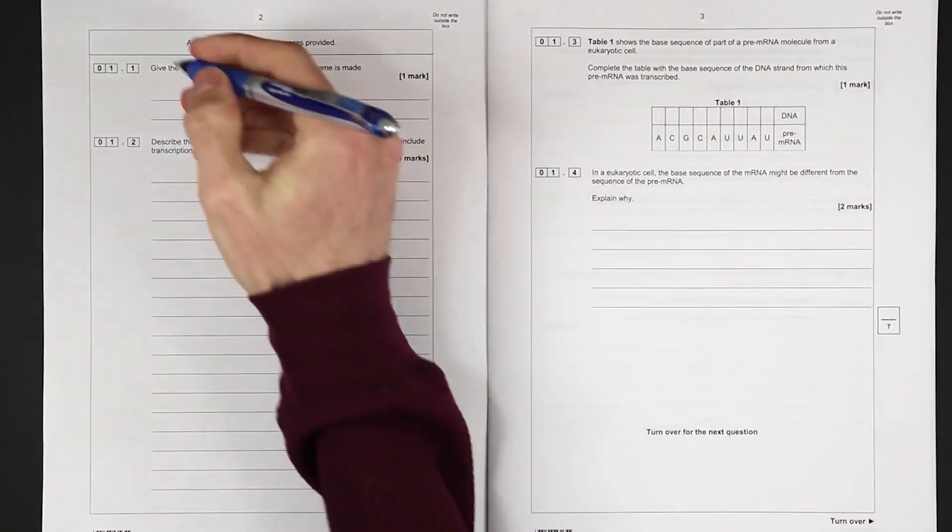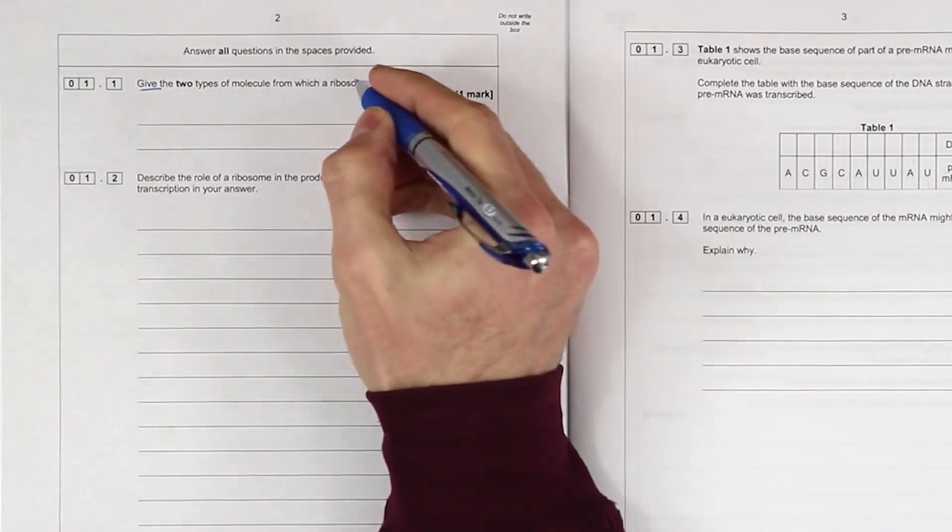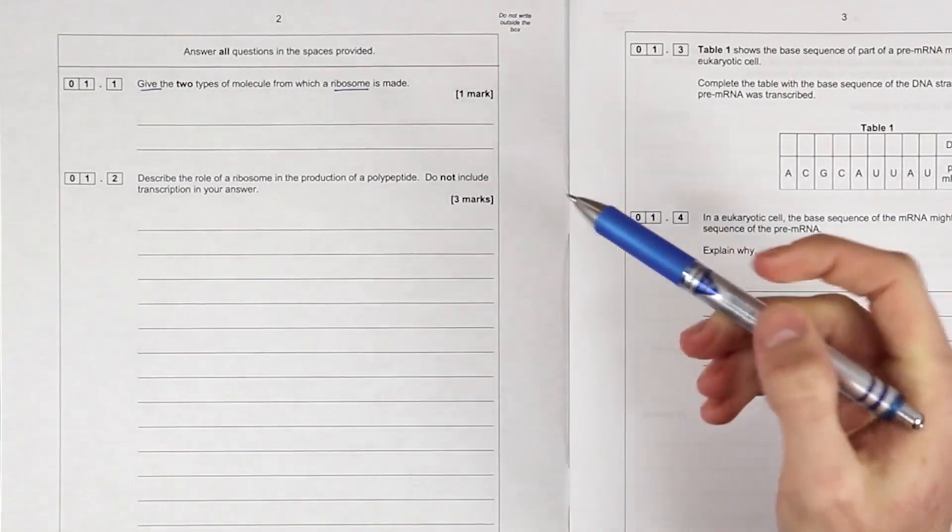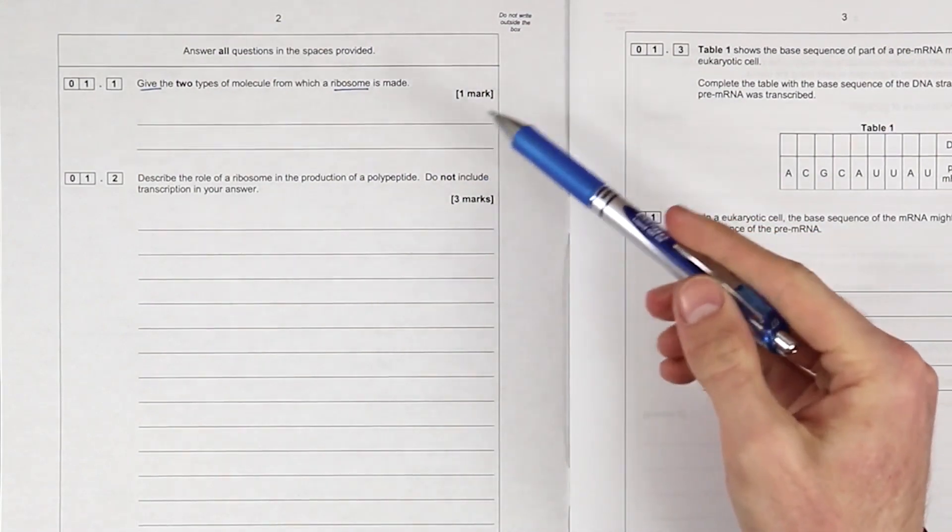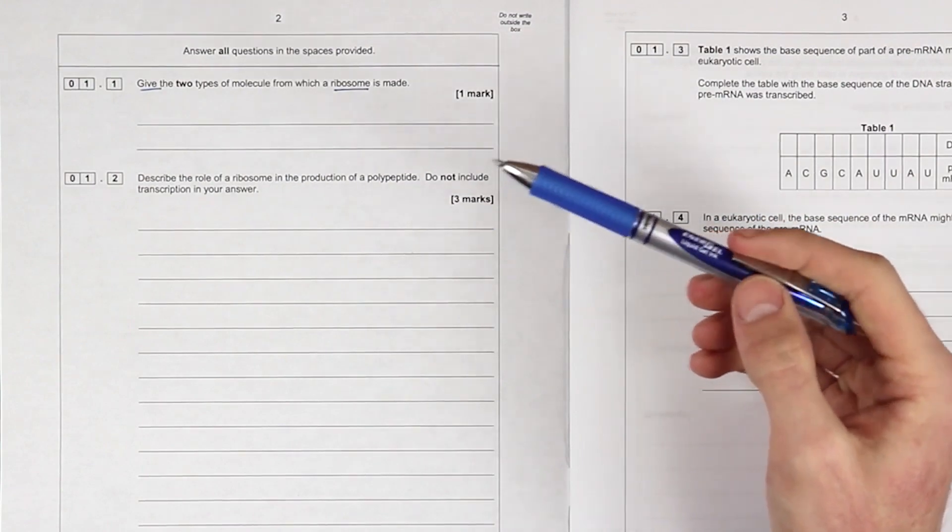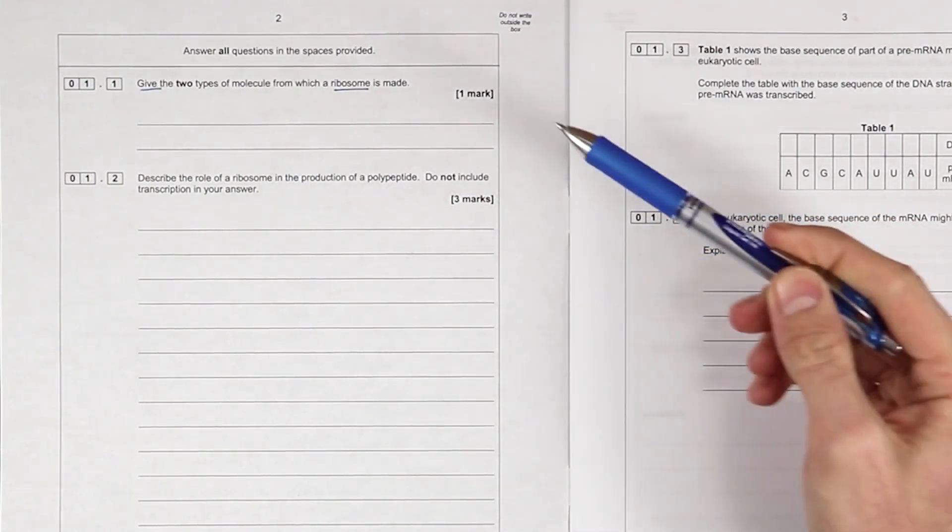Question one: 'Give' is our command word - the two types of molecule from which a ribosome is made. Now the first thing that strikes me here, I know this is in some of the new spec OCR and Excel papers. I don't actually remember which one. This question has come up for them as well. This didn't used to be in any of the A-levels, so there must be some communication between the exam boards.